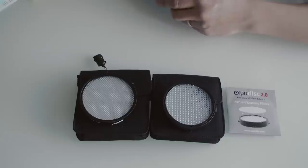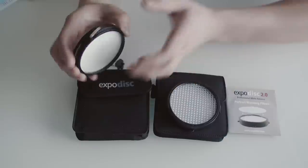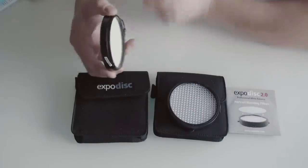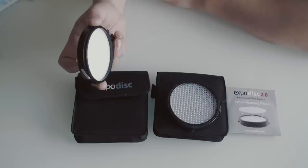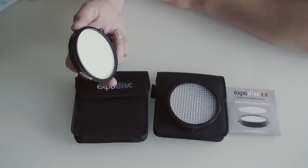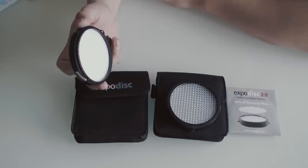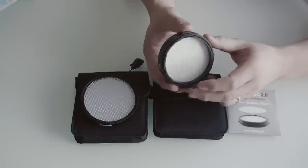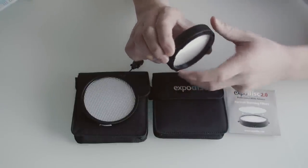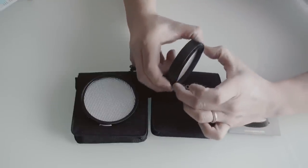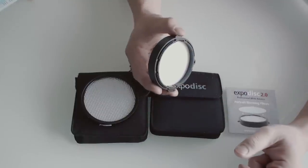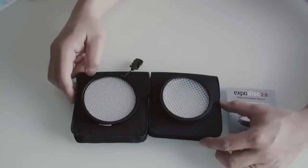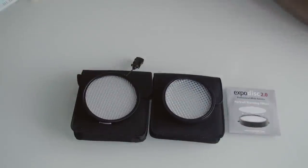Now the other thing that's worth mentioning is that ExpoDisc 1.0 had these sort of somewhat finicky ball spring clips here on the filter thread ring and occasionally if you weren't careful this ExpoDisc would pop off your camera lens. I didn't find it a problem but some people in forums have complained about that whereas the new ExpoDisc 2.0 has this sort of camera lens cap like kind of locking mechanism with some actual teeth on the sides here to actually grip onto your filter threads so that it doesn't pop off.